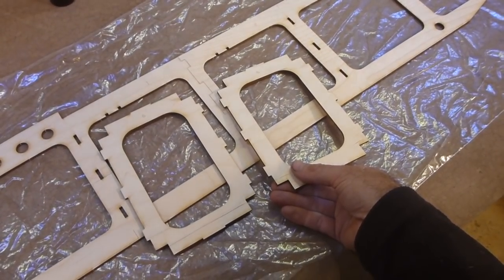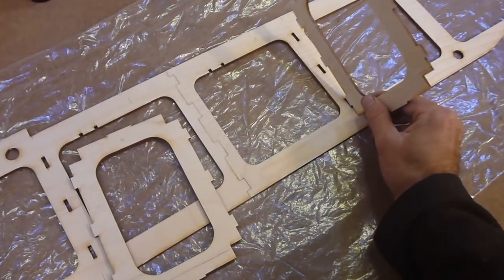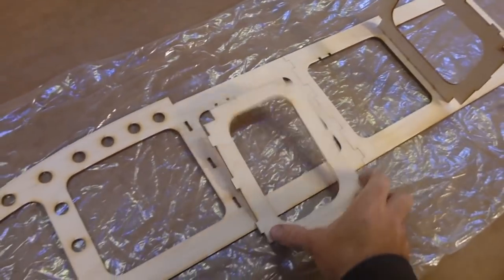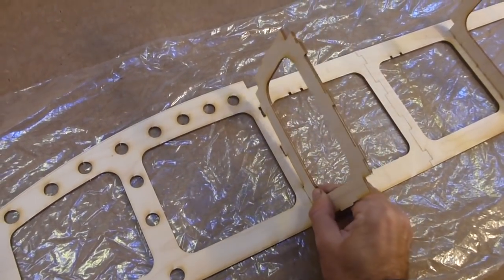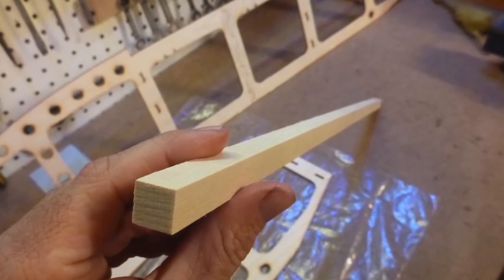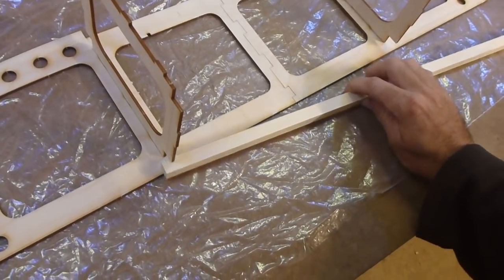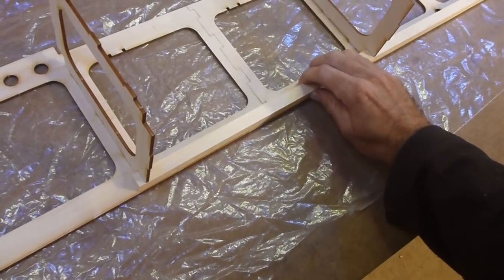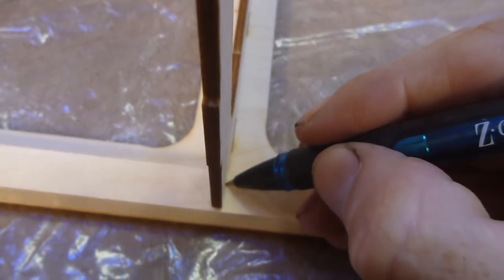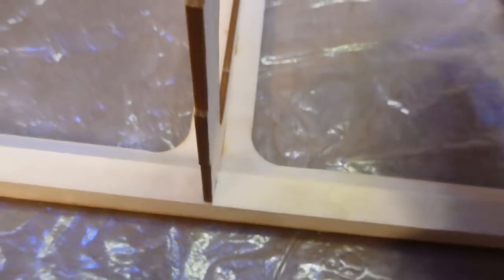Next locate both bulkheads part number 6 and put them in place without gluing yet. Find the half-inch square pieces of basswood provided with the kit, putting them in place on the fuselage side, aligning them with the front of the forward bulkhead and marking them at the rear of the aft bulkhead.